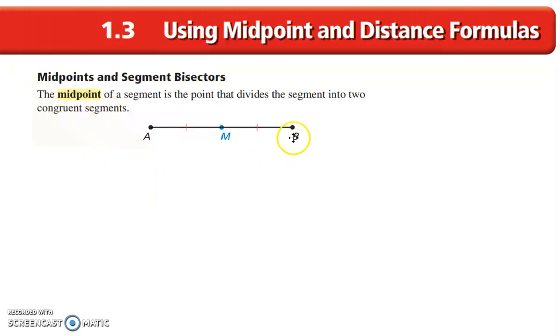The midpoint of a segment is the point that divides a segment into two congruent segments. That means from A to M is the same length as from M to B, because M is the midpoint of the two, so this segment AM is congruent to MB.